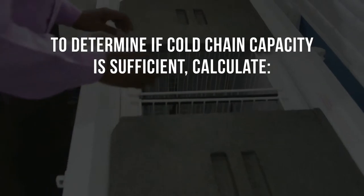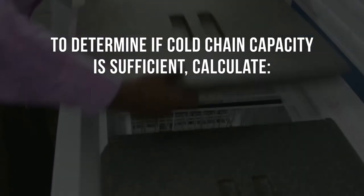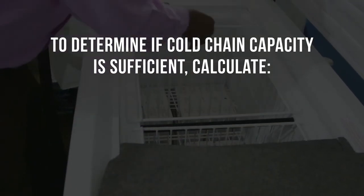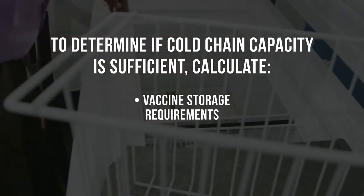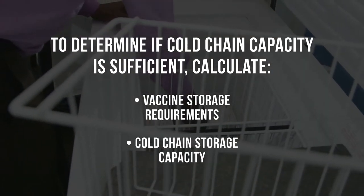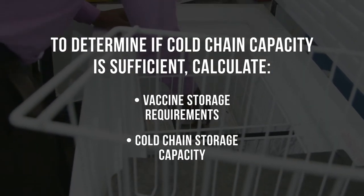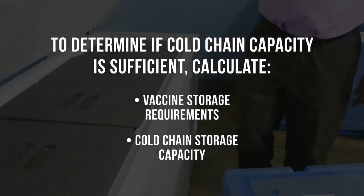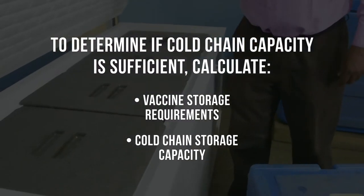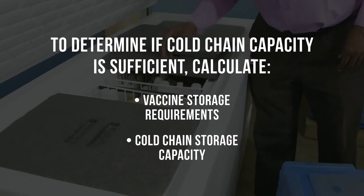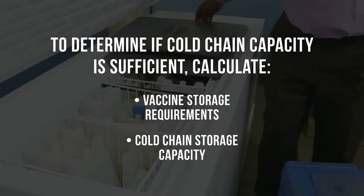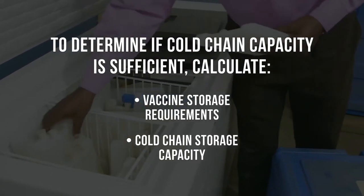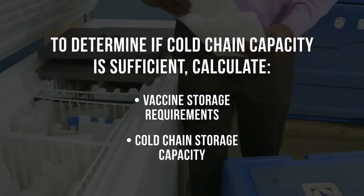To determine if your cold chain storage capacity is sufficient, you will need to calculate the storage requirements for vaccines and the storage capacity of your existing cold chain equipment. If the storage volume required for your vaccines is greater than your existing cold chain storage capacity, you have a capacity issue that will need to be addressed.